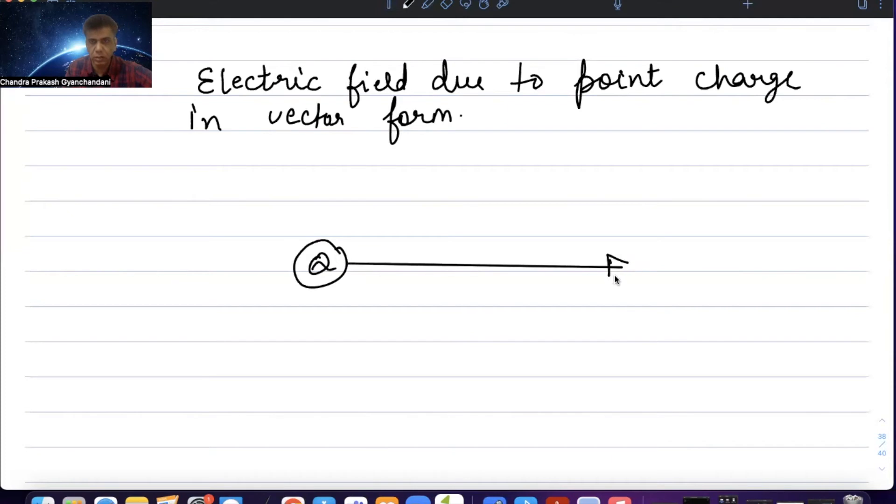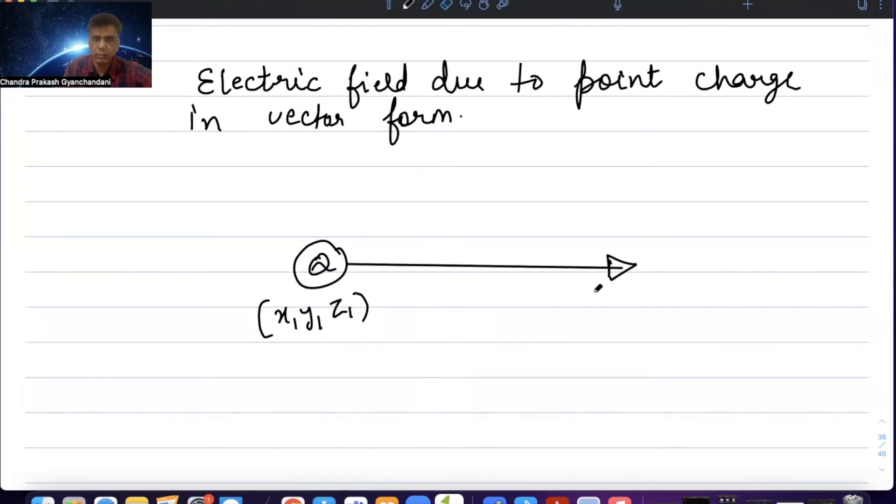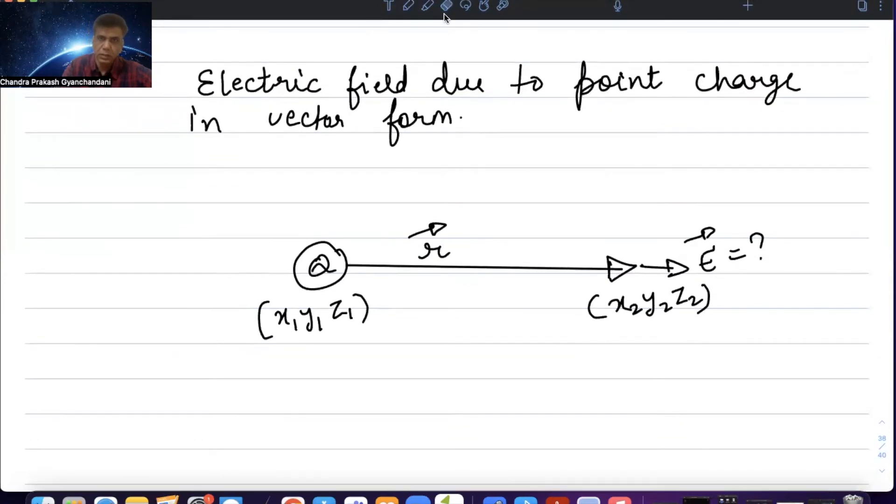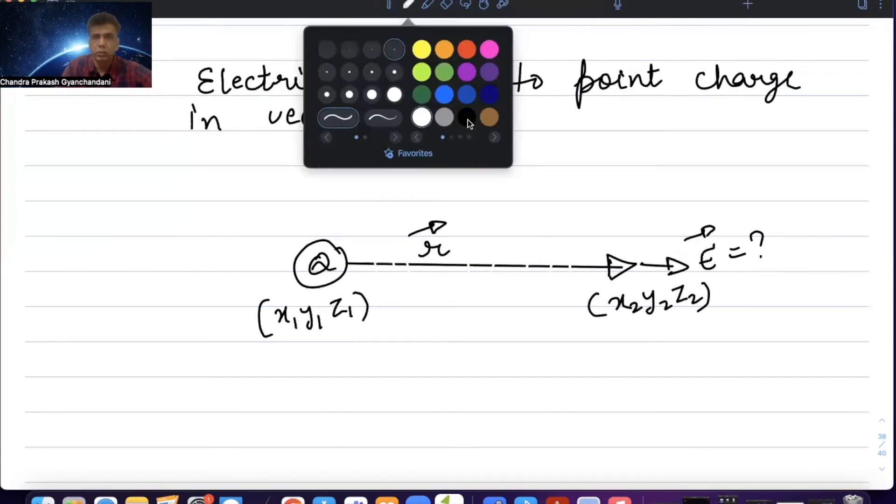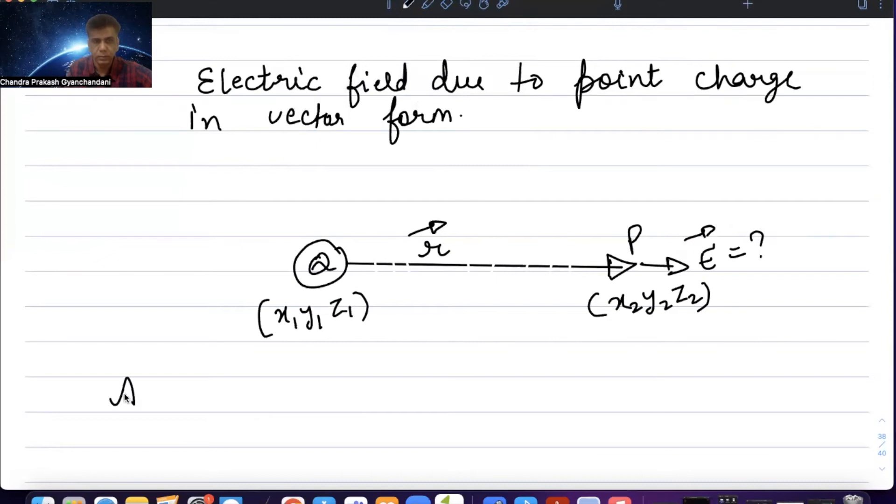This is the coordinate x1, y1, z1 for the source charge, and a point x2, y2, z2. This r vector is defined from the source to the point P. At point P, the electric field vector is k Q upon r squared.